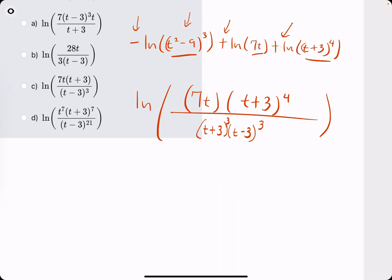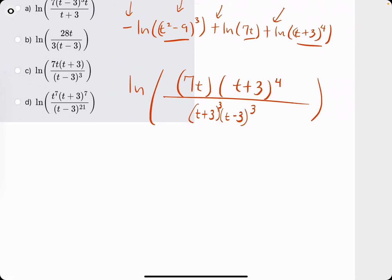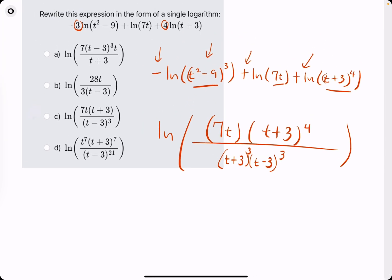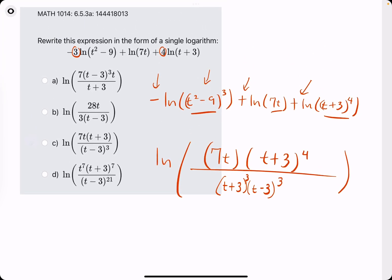It showed how t² - 9 factored into (t + 3)(t - 3). Alright, so we have (t + 3)^4 on top, (t + 3)³ on the bottom. So we get rid of as many as we can. If we get rid of 3 on top and bottom, it leaves us with 1 (t + 3) on top.